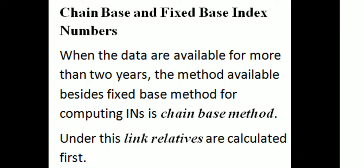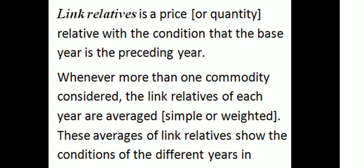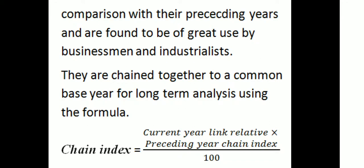Under the Chain-based Method, Link Relatives are calculated first. A Link Relative is a price or quantity relative with the condition that the base year is the preceding year. Whenever more than one commodity is considered, the Link Relatives of each year are averaged — simple or weighted. These averages of Link Relatives show the conditions of different years in comparison with the preceding years, and are found to be of great use to businessmen and industrialists.